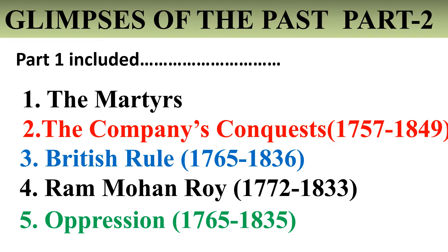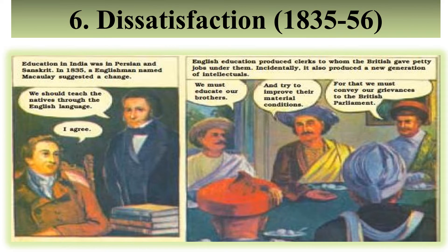Now let's look at part 2. This is the sixth event described here, known as dissatisfaction, from 1835 to 1856. Dissatisfaction means when you are not satisfied with something that is happening to you. The Indians were dissatisfied with the behavior and policies of the Britishers and how they were governing all of us. Because of that, dissatisfaction rose in our society.